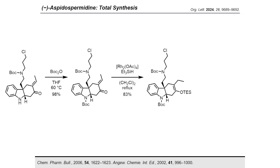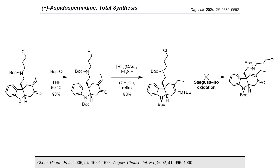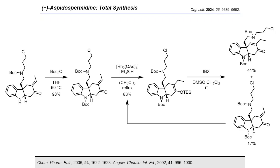An oxidation was then proposed to afford the endoenone. For this, a Saegusa-Ito reaction was initially envisaged. Despite the silyl enol ether being submitted to various Saegusa-Ito protocols, the endoenone was not obtained. We were then drawn to an IBX-mediated oxidation reported by Nicolaou and co-workers, in which silyl enol ethers were converted to their corresponding enones. After some optimization, the desired N-BOC endoenone was obtained in a reasonable yield of 41%, together with the regioisomeric N-BOC exoenone in a yield of 17%, which could then be resubmitted to the 1,4-hydrosilylation reaction.